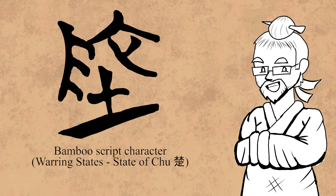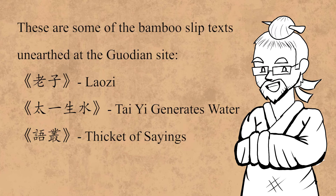This glyph appears in several texts, including the excavated 老子, 太一生水 (Taiyi Generates Water), and 语丛 (Thicket of Sayings).